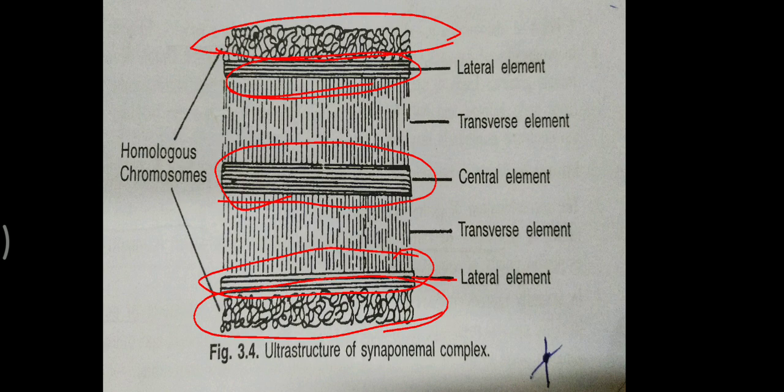There are transverse filaments on both sides of the central element. These are the transverse elements — transverse meaning vertical cross-sections like this. These transverse elements are found on both sides of the central element, as we can see here.